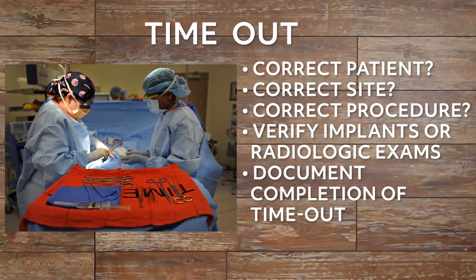Once the patient is prepped and draped in the OR, the circulating nurse usually initiates the timeout that takes place between the entire surgical team. The timeout is a verbal agreement that includes, at a minimum, correct patient identity, correct site, and correct procedure to be performed. If implants or radiologic exams are involved, these should be verified at this time also. Document the completion of the timeout, indicating that everything has been verified and agreed upon.